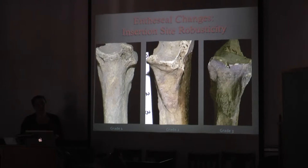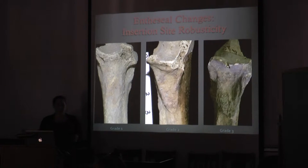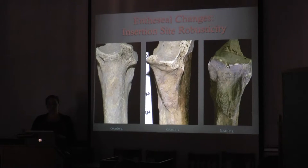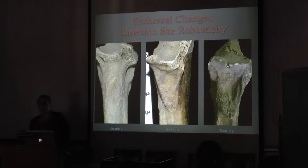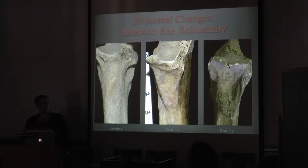Entheses are the rugged attachment areas where muscles insert into bone. The development and degree of expression of these bony manifestations has been linked to forceful and repetitive activities involving specific groups of muscles. Essentially, the more you use a group of muscles, the bigger they get, and therefore so does their attachment area on bone.